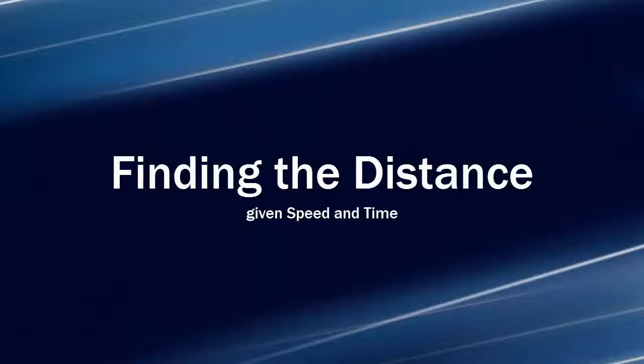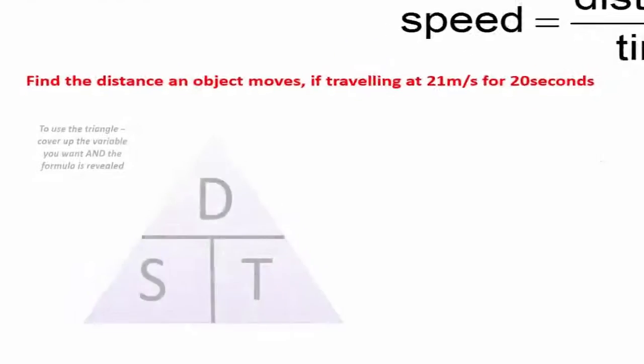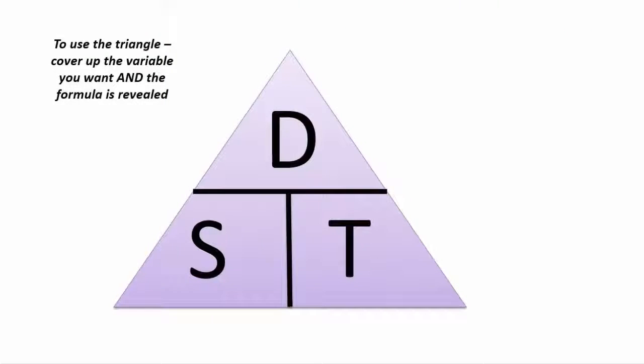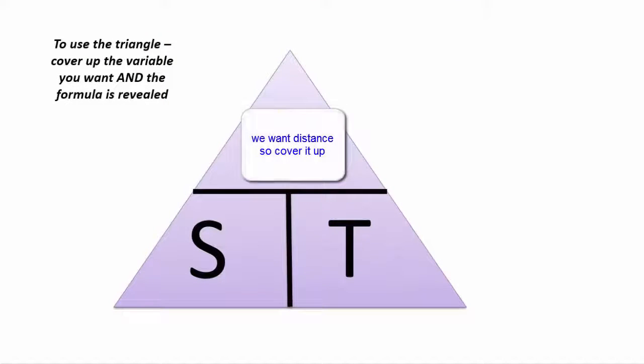This video is about finding distance given speed and time. If we start with our formula in our triangle, we cover up the distance — that's what we want to know — and we see that the formula is speed times time.